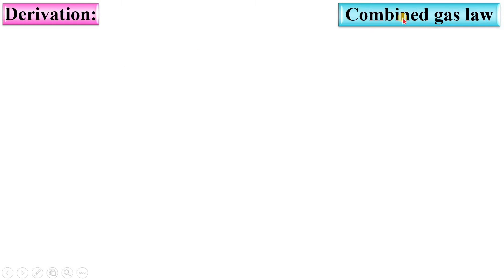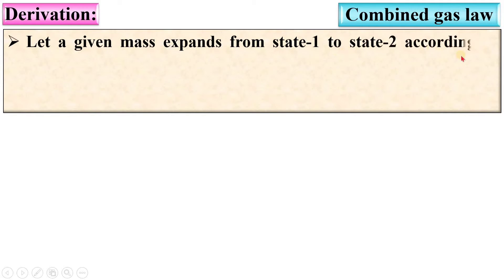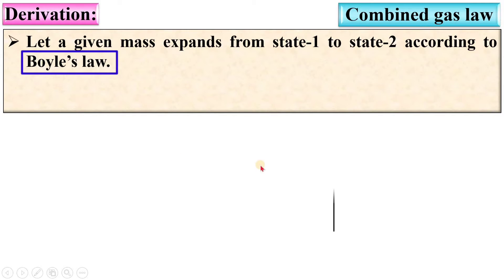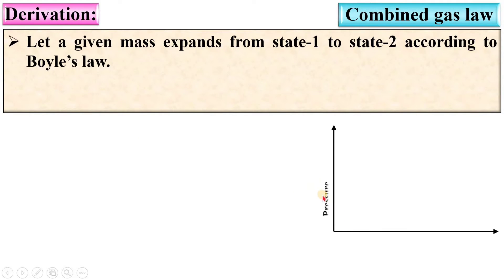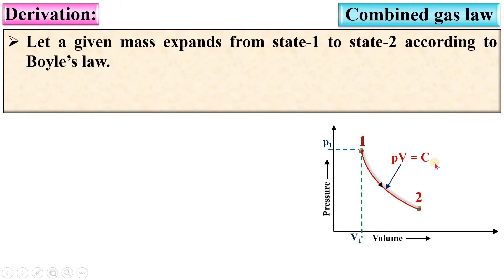Now next, derivation of combined gas law. Let a given mass expand from state 1 to state 2 according to Boyle's law. First consider Boyle's law and draw the PV diagram. Let this be state 1, with corresponding pressure P1 and volume V1. This is state 2, so this is process 1-2. According to Boyle's law, this is a constant temperature process, so PV is equal to constant.